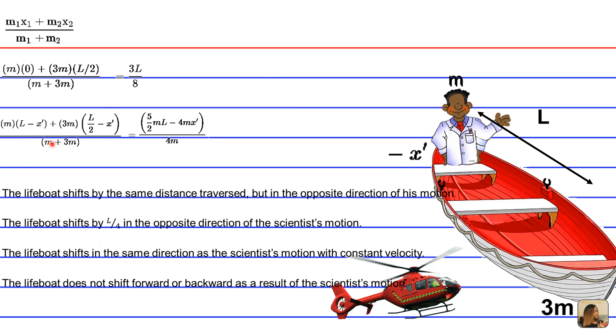All over m plus 3m. So that's going to give you 5 over 8L minus x prime.